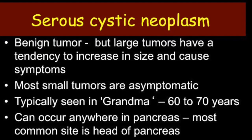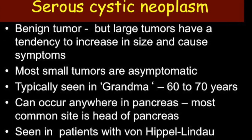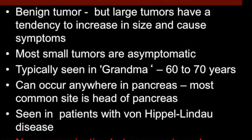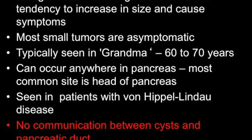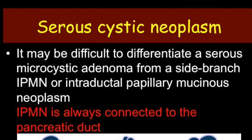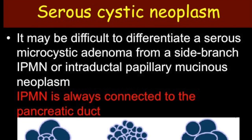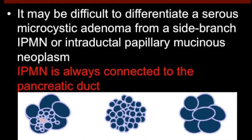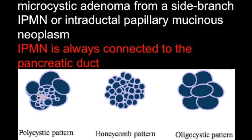Serous cystic neoplasms are benign tumors, but large tumors can increase in size and cause symptoms; otherwise they are asymptomatic. They can occur anywhere in the pancreas, but the most common site is the head of the pancreas, and they can be seen in association with Von Hippel-Lindau disease. It can sometimes be difficult to differentiate a serous microcystic adenoma from a side-branch IPMN, but IPMNs are always connected to the pancreatic duct, while serous cystic neoplasms do not communicate with the pancreatic duct.